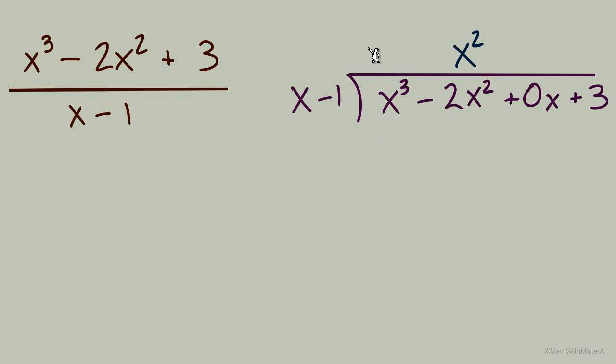Once we have that first answer, we're multiplying back down to both of these terms in the divisor. We have x cubed minus x squared. The next operation is a subtract, but I always like to flip signs and add. It just keeps me on the right path with my signs.